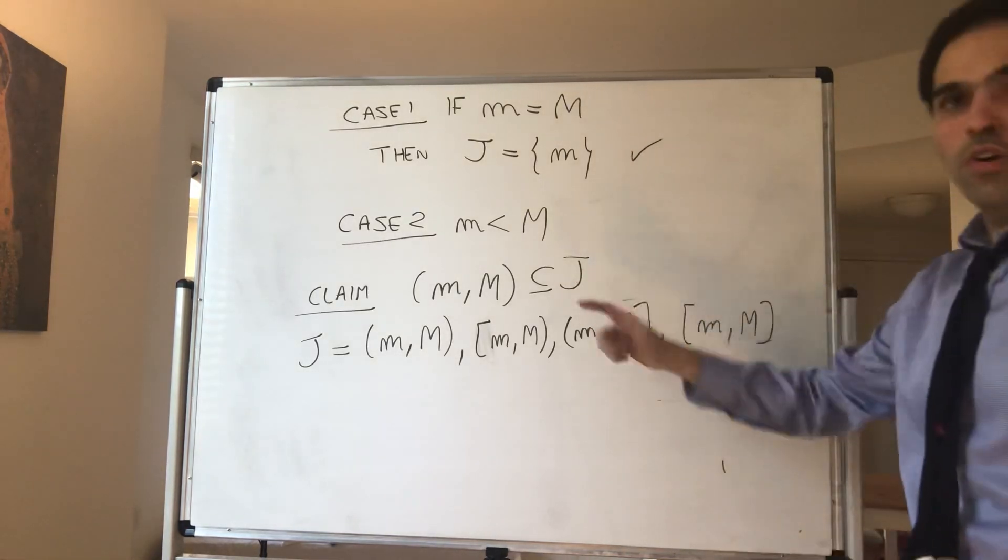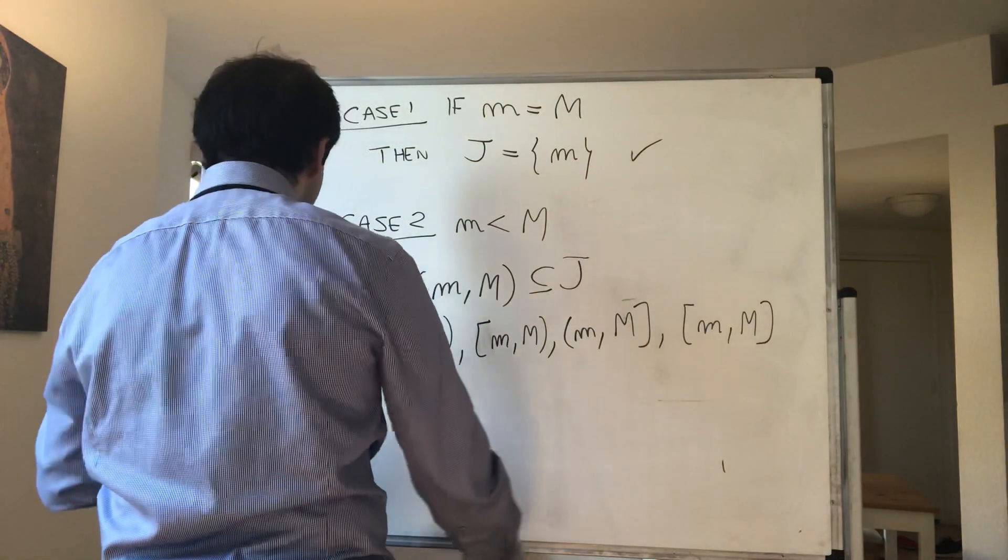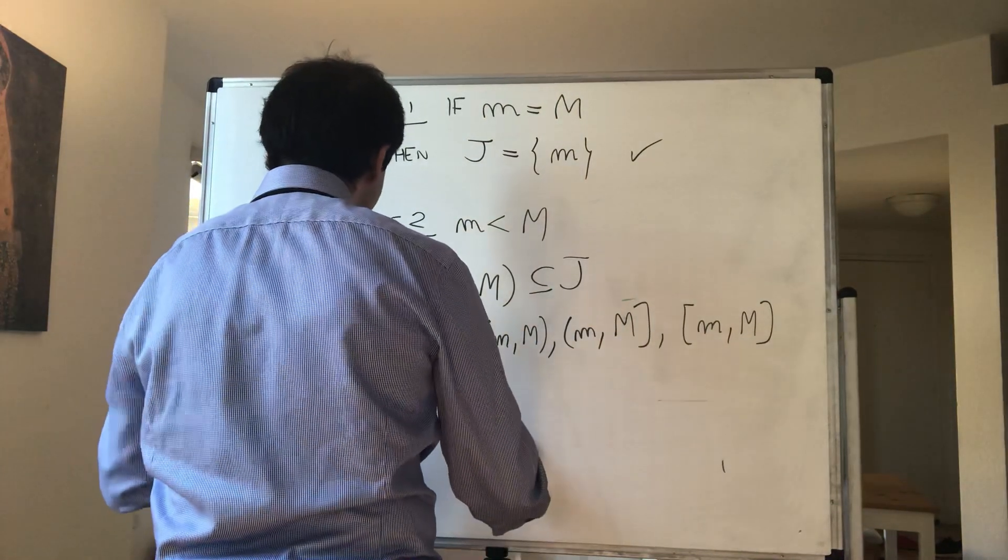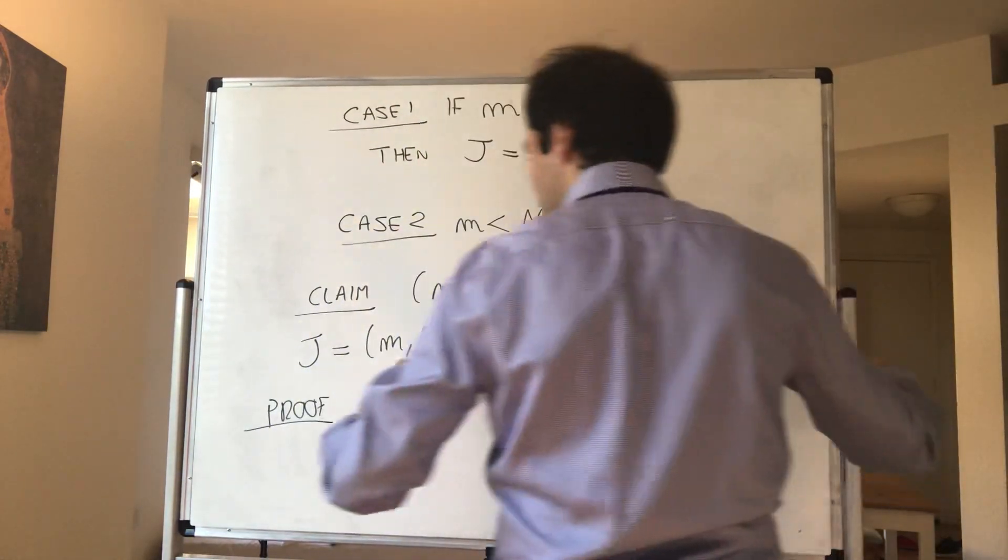And lastly, it could include all of that. But nothing more. So that's why we actually have J as an interval.